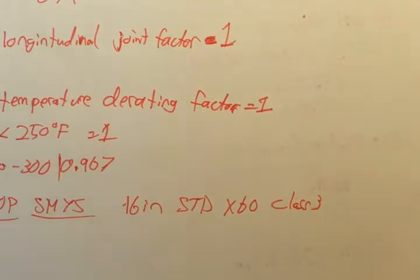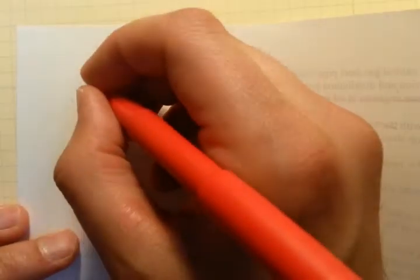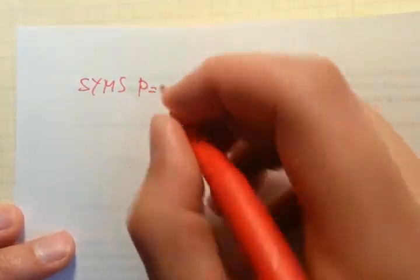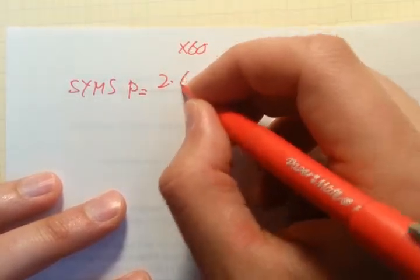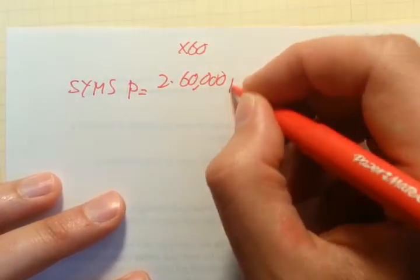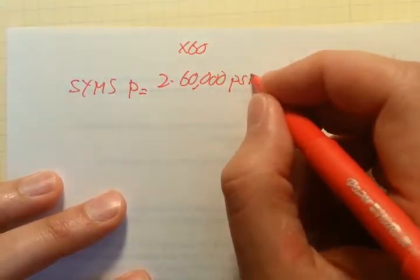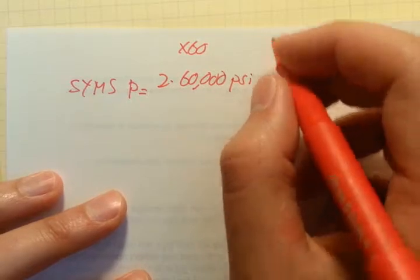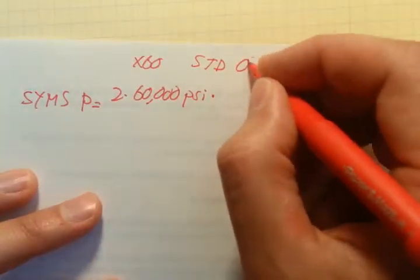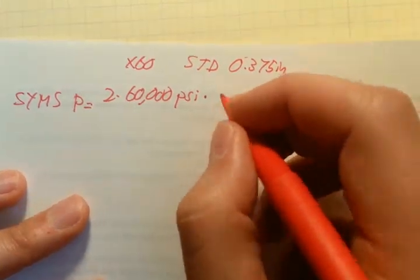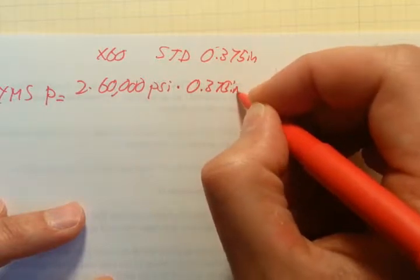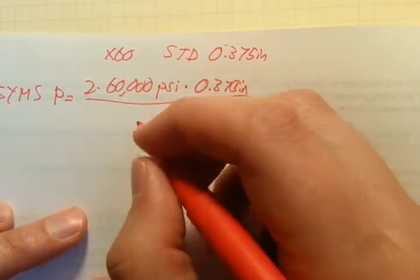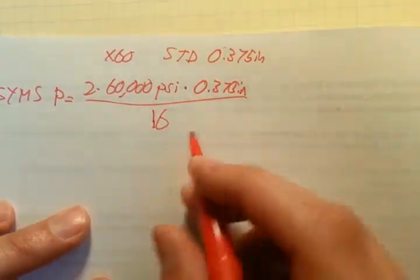Let's find the yield pressure first. That's going to be 2 times the X60, which is 60,000 PSI, times the wall thickness—standard wall thickness for 16 inch pipe is 0.375 inches—and all that over, in this case the size and outer diameter are the same, so just over 16.